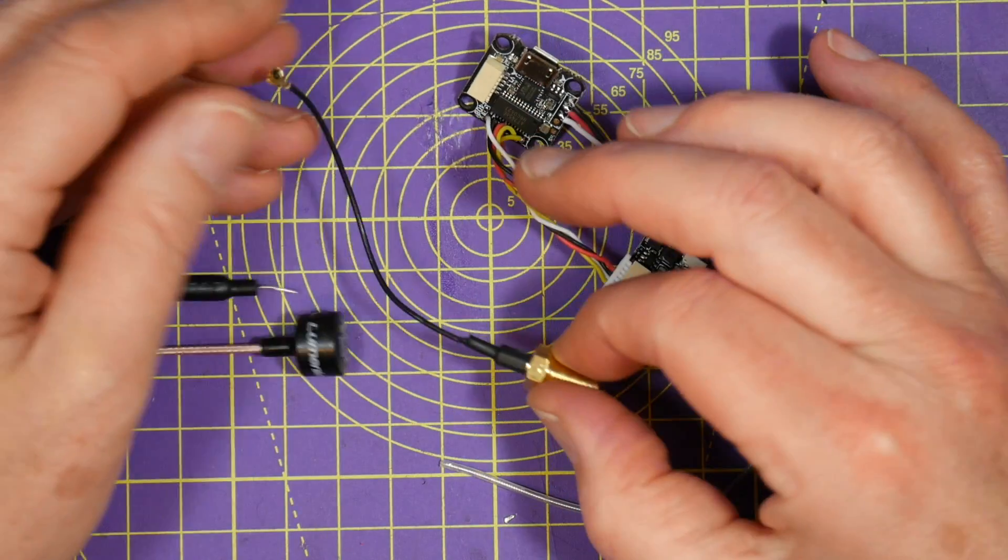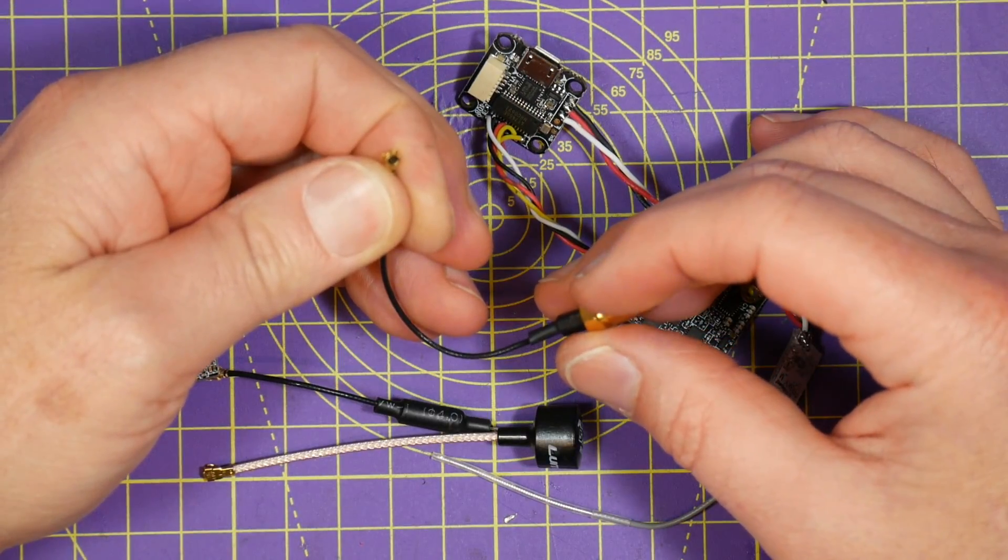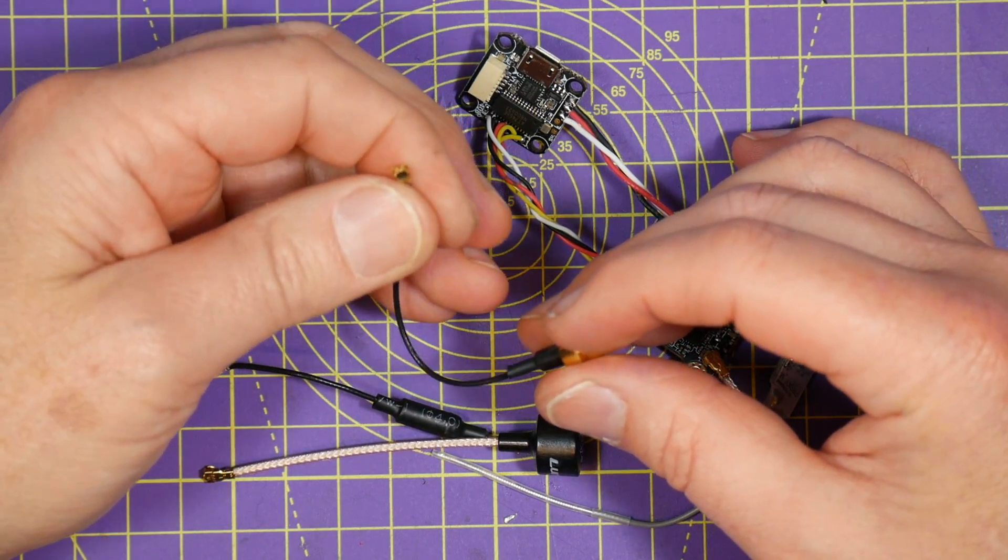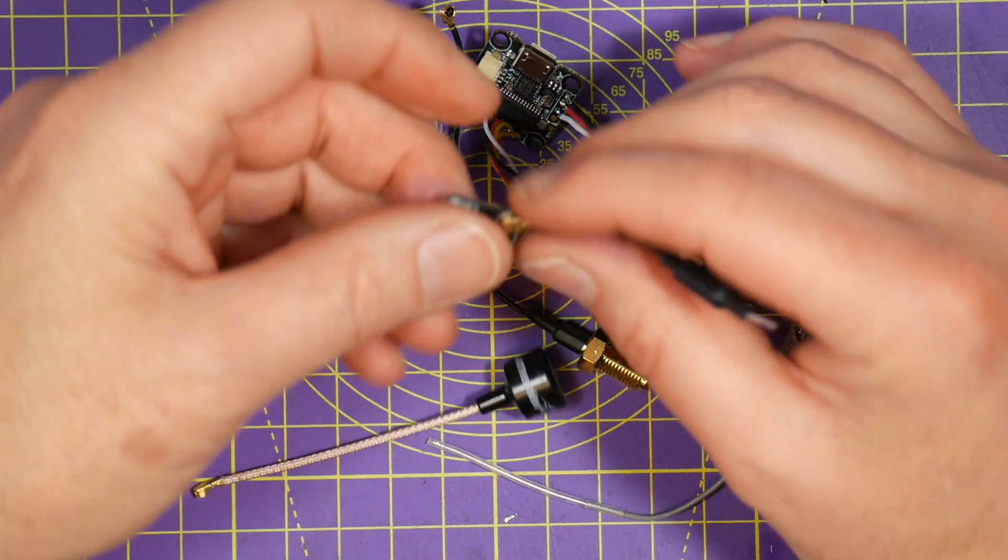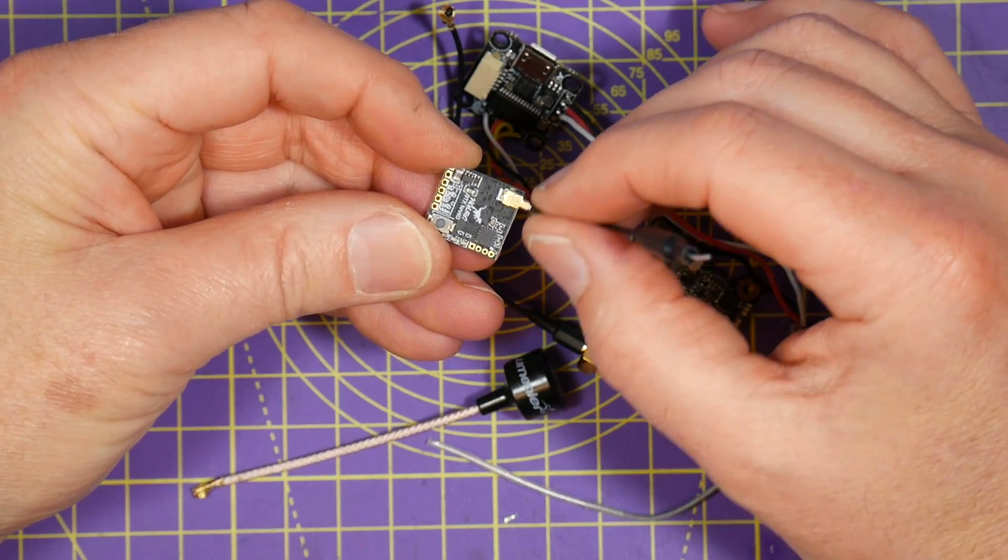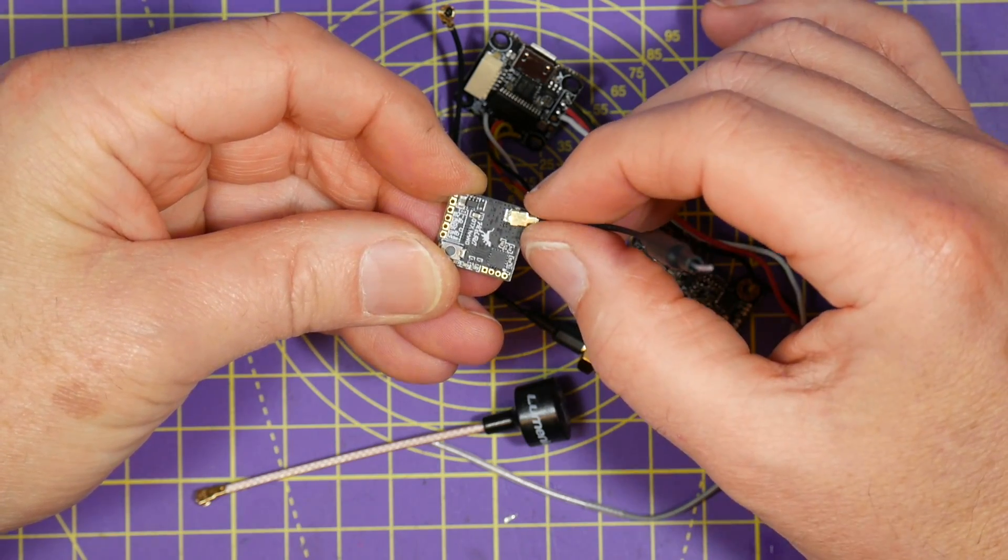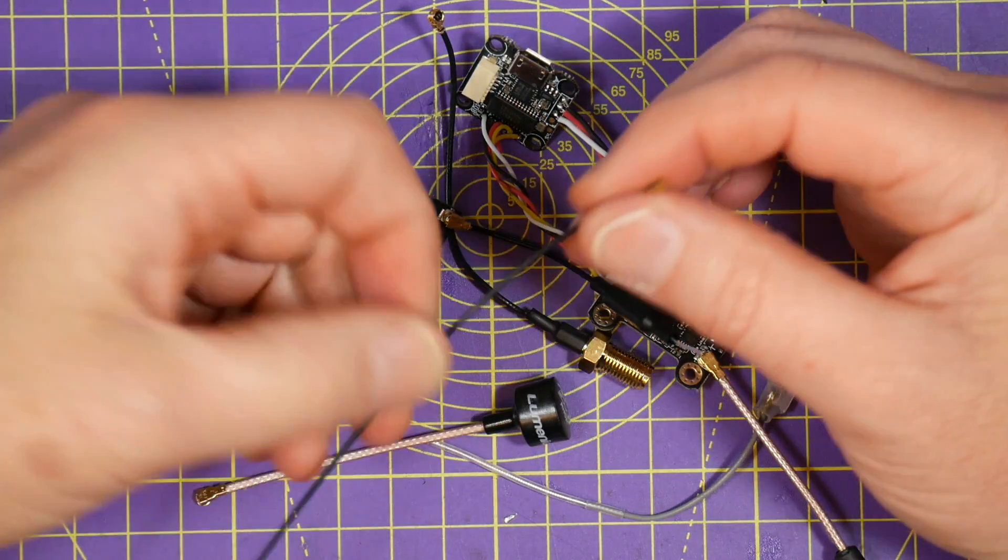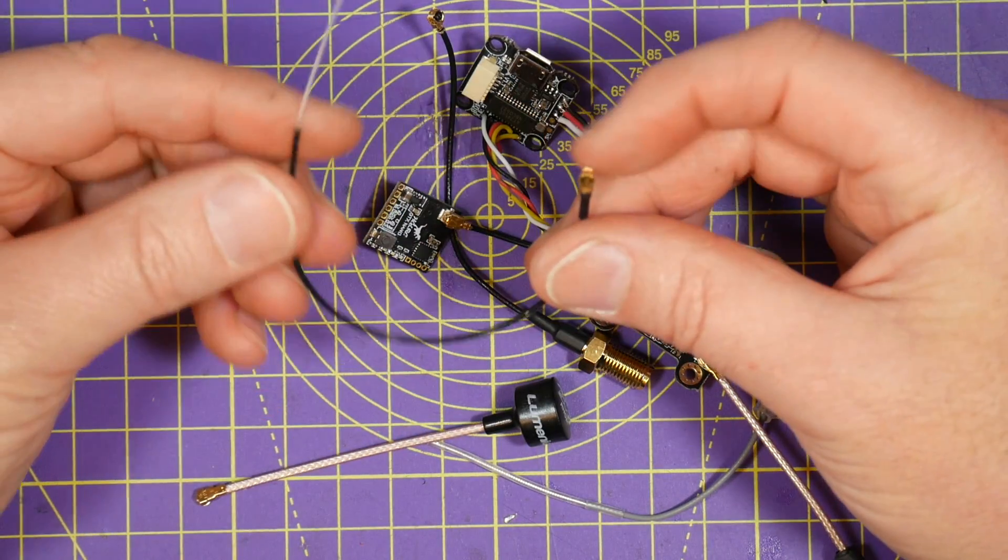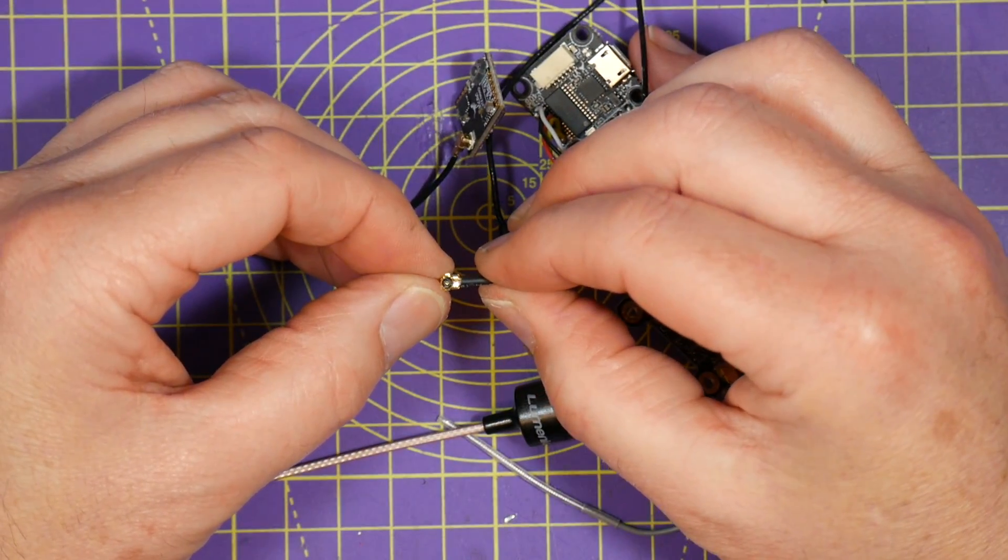Let's move on to UFL connectors like this guy here. These are also known as IPEX connectors and the UFL is a common connector on very small VTXs. Here we go. We've got a small nano VTX here. They're also very popular on radio receivers like the FRSky XM and XM+. So if you look at a spare antenna for an XM or an XM+, you'll see it's using the same small UFL connector.